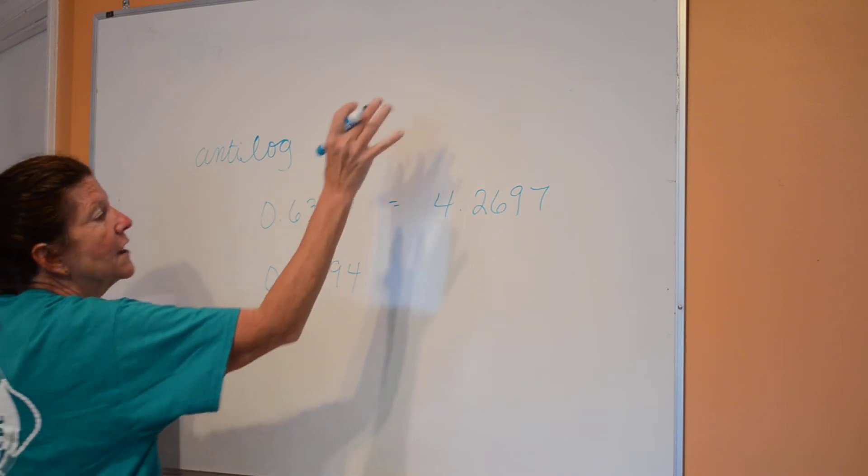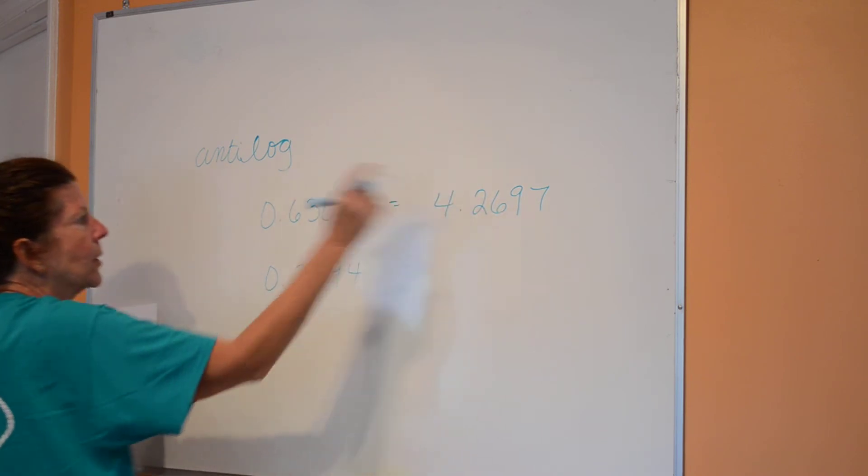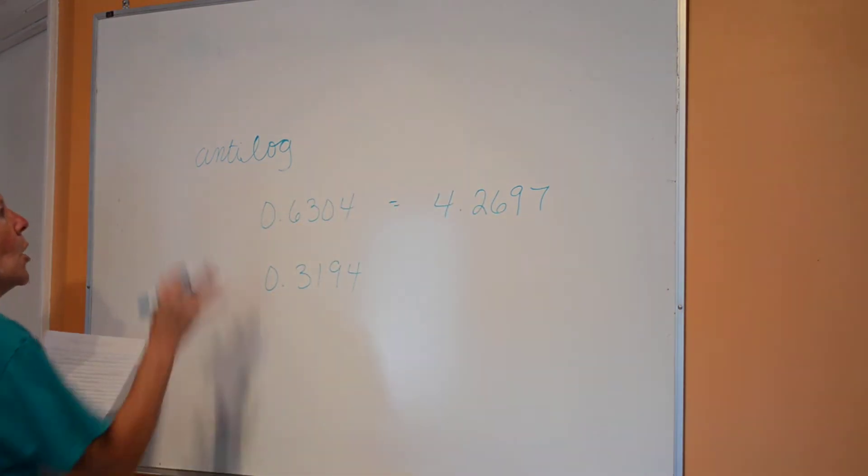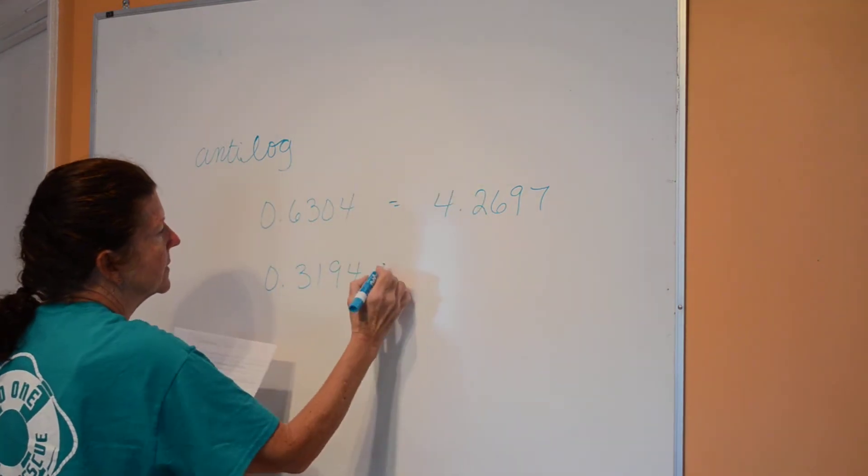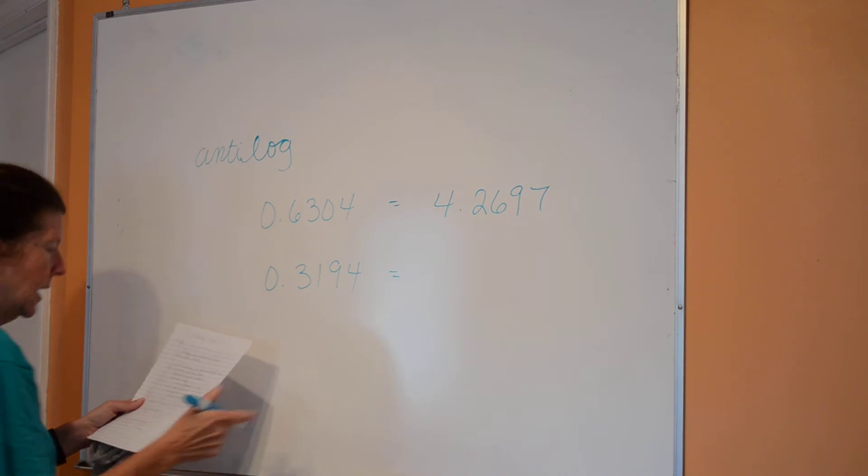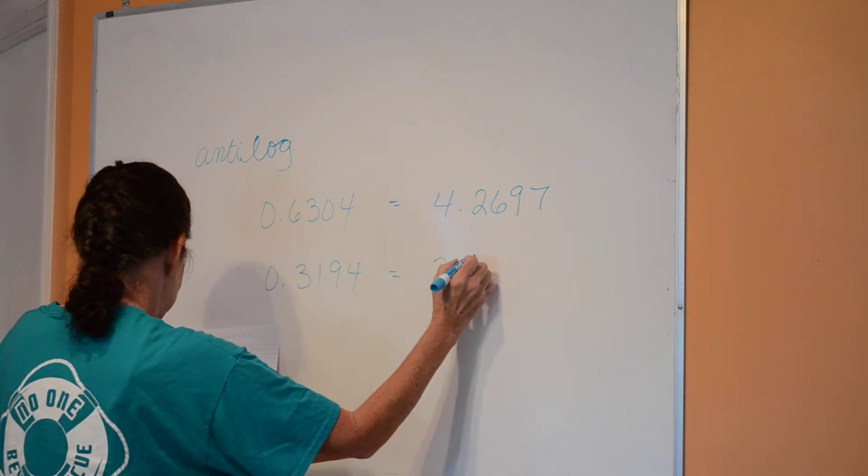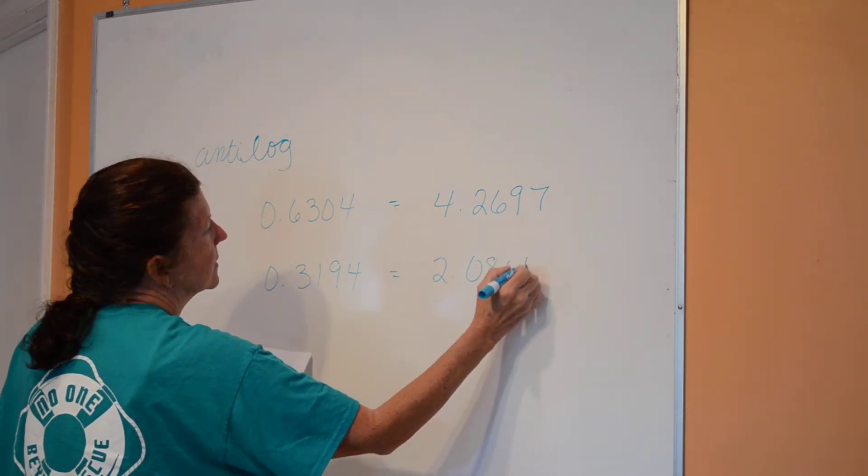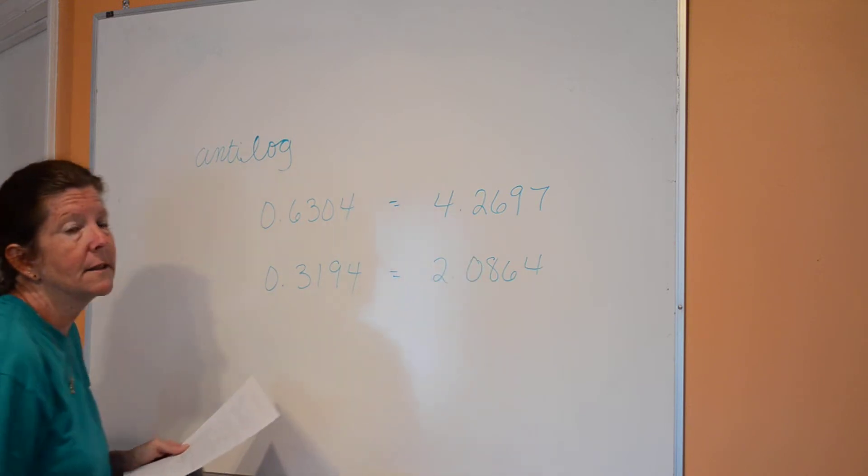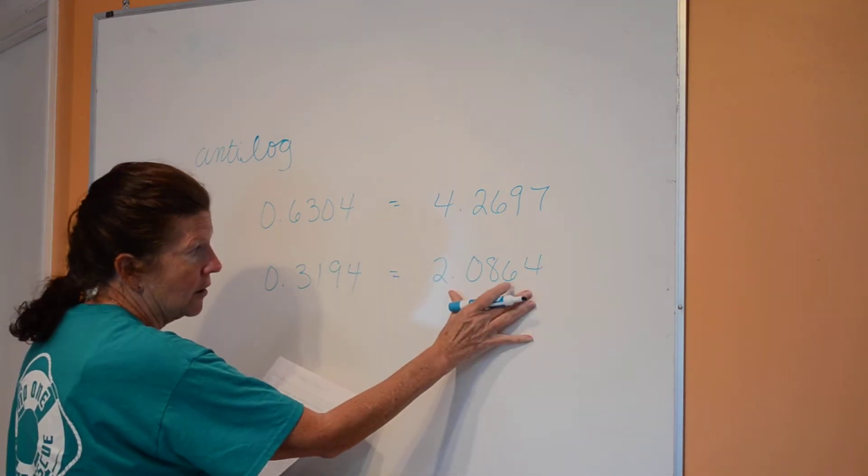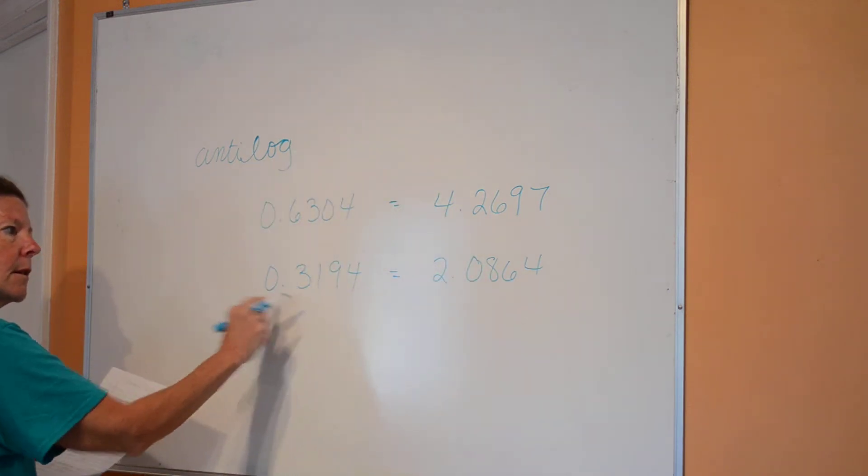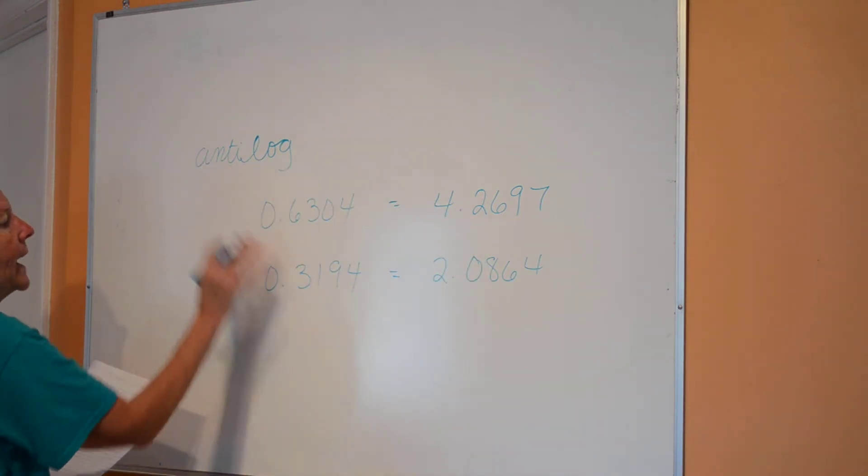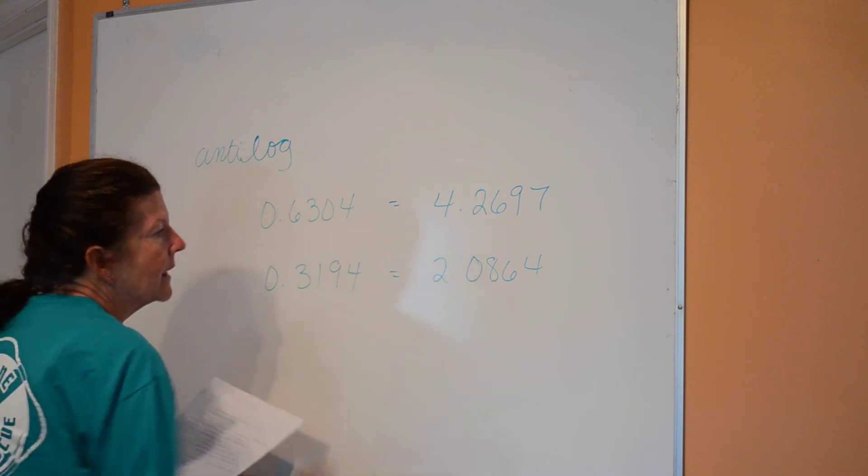So truthfully, the log of that number gives me this, or the anti-log of this gives me that. The anti-log of this number is going to give me 2.0864. So what that means is if I take the log of 2.0864, my answer is this.